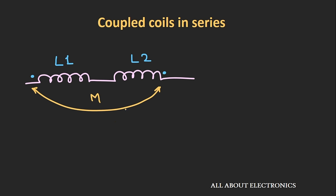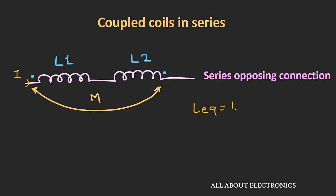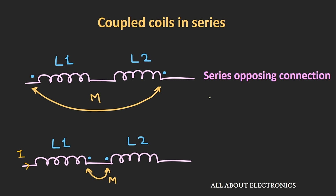When one dot is at one end of the coil and the other dot is at the other end, the current I is entering the dot in one coil while leaving the dot in another coil — this is known as a series opposing connection, as the flux in both coils cut each other. The value of the equivalent inductance is L1 + L2 − 2M. Similarly, the other configuration with current leaving one dot and entering the other is also a series opposing connection with equivalent inductance L1 + L2 − 2M.